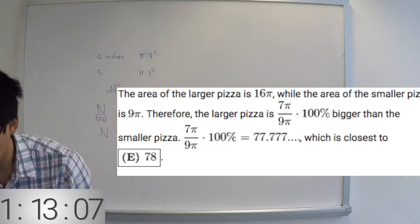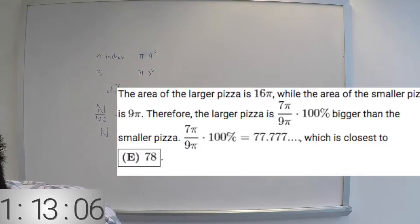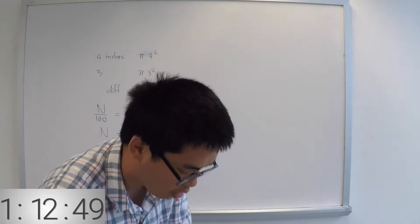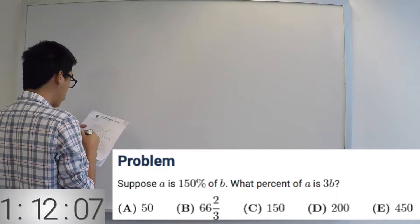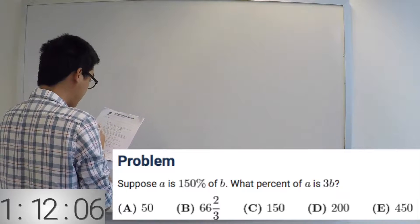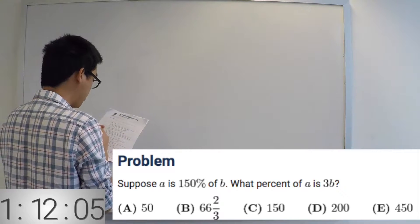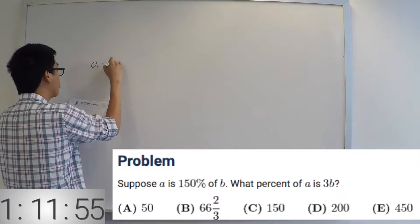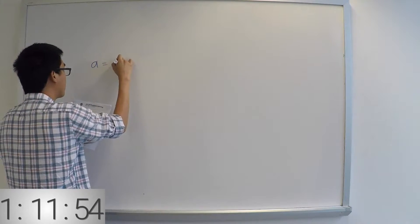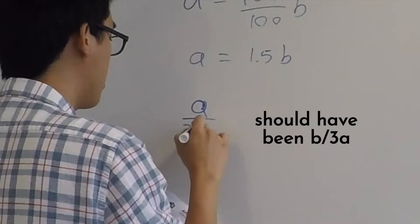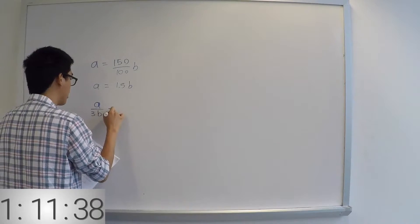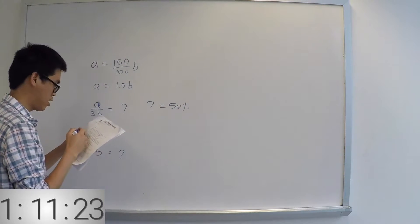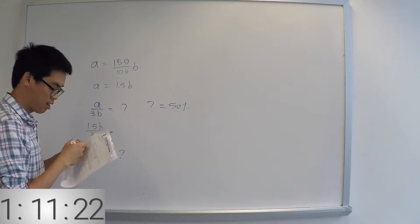Problem 2: A is 150% of B. What percent of A equals... so 1 over 3D is 1%, 50%. The answer is A.